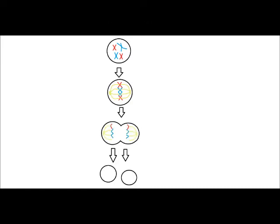The next phase is anaphase. Chromatids begin to separate and move to opposite ends of the cell.